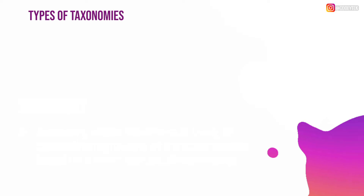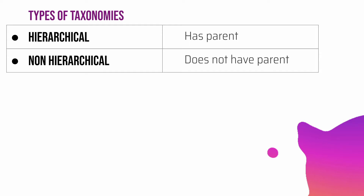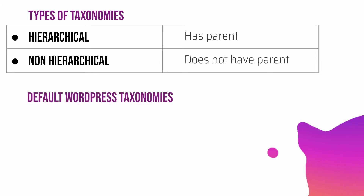You might say categories and tags are the taxonomies, and yes you can also register new ones if you want. Categories and tags are default taxonomies in WordPress. But if you ask me there are really only two types of taxonomies: hierarchical ones which have got parents, and non-hierarchical ones which do not have parents. Even your custom taxonomies fall into one of these two types.